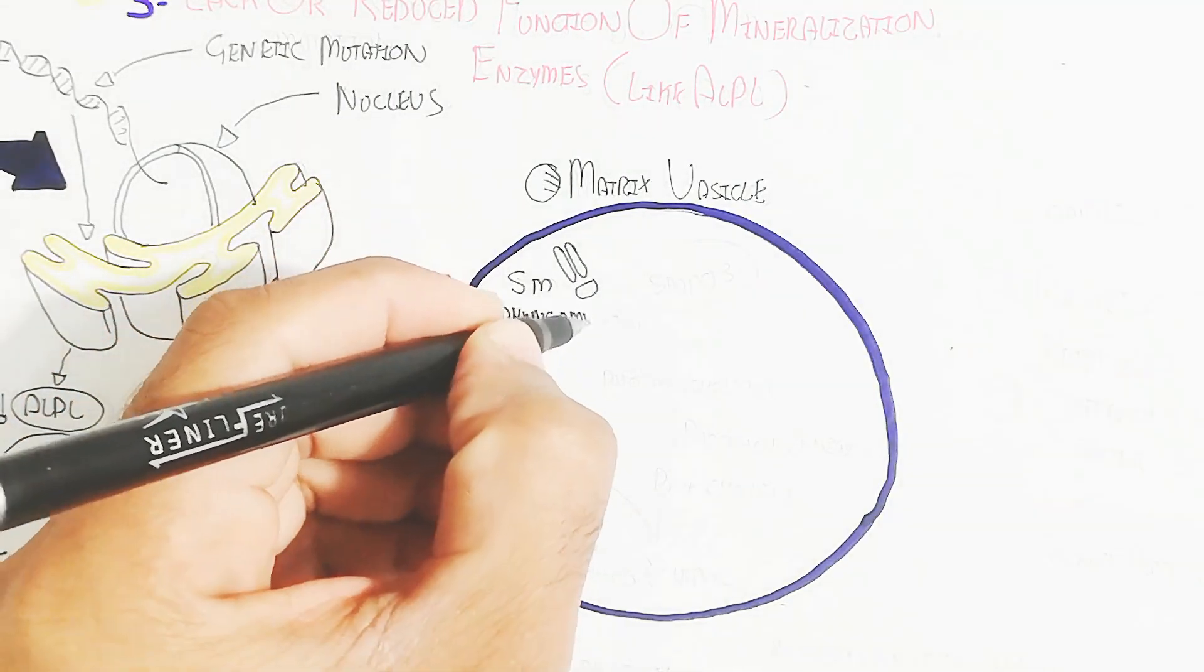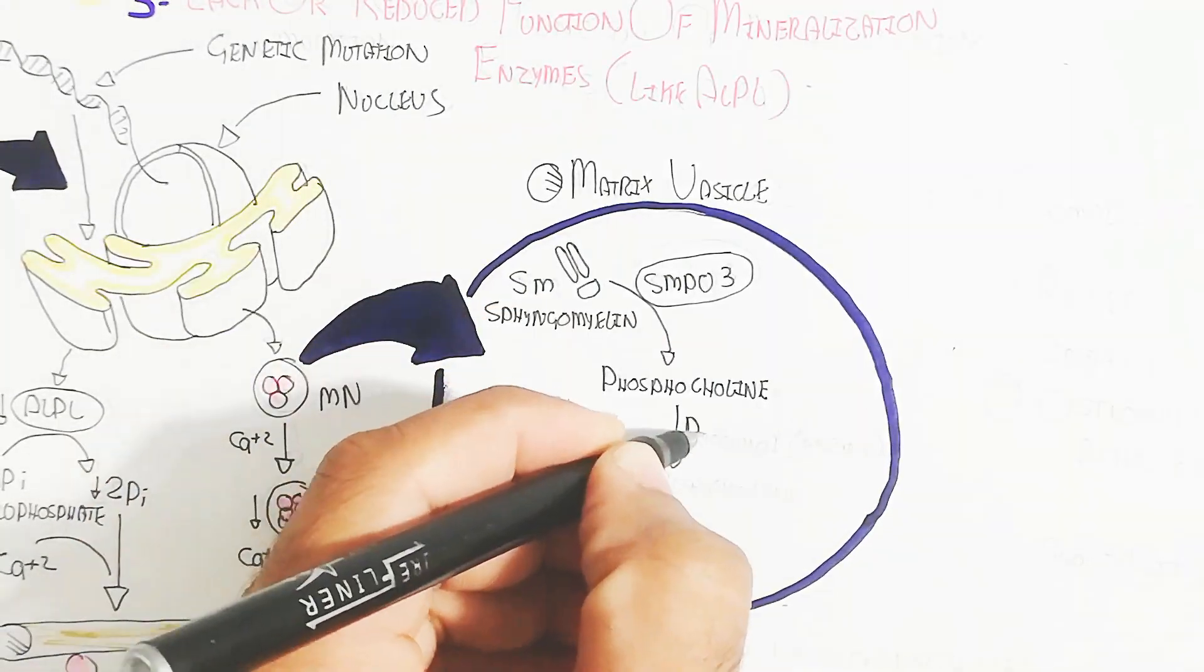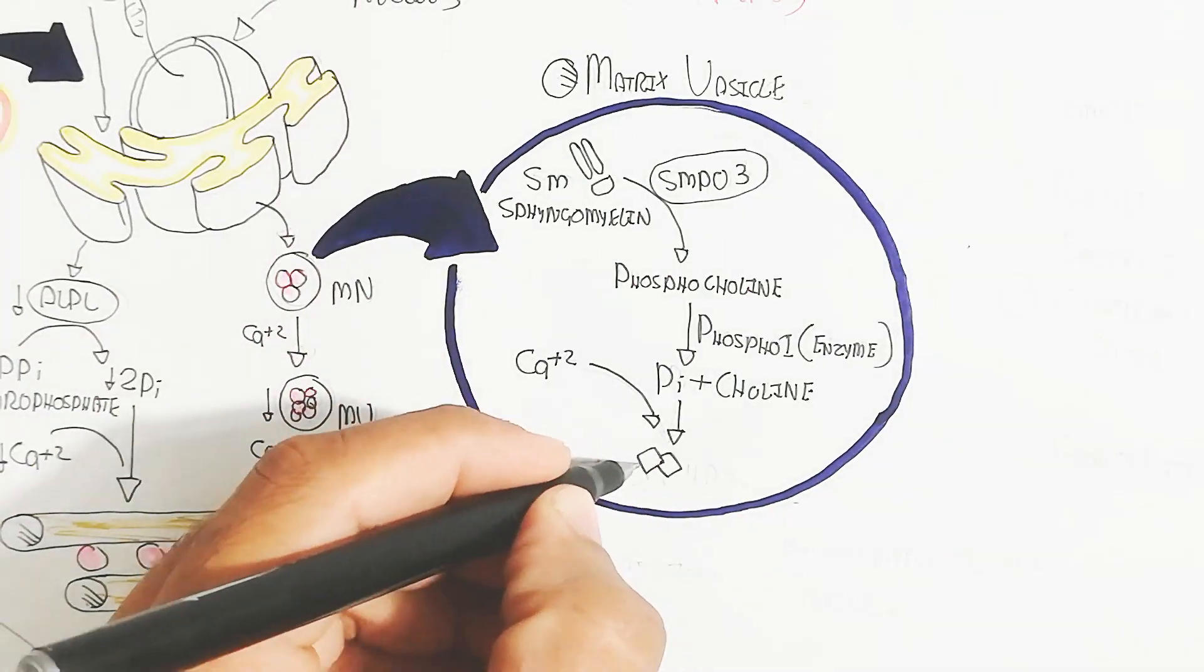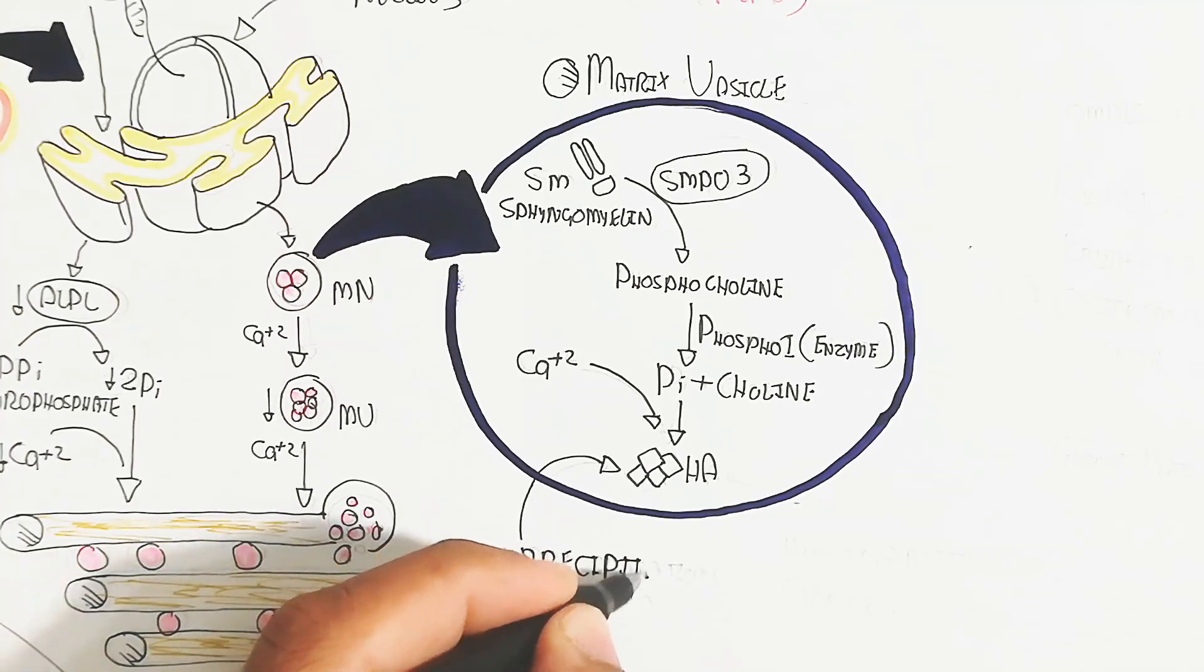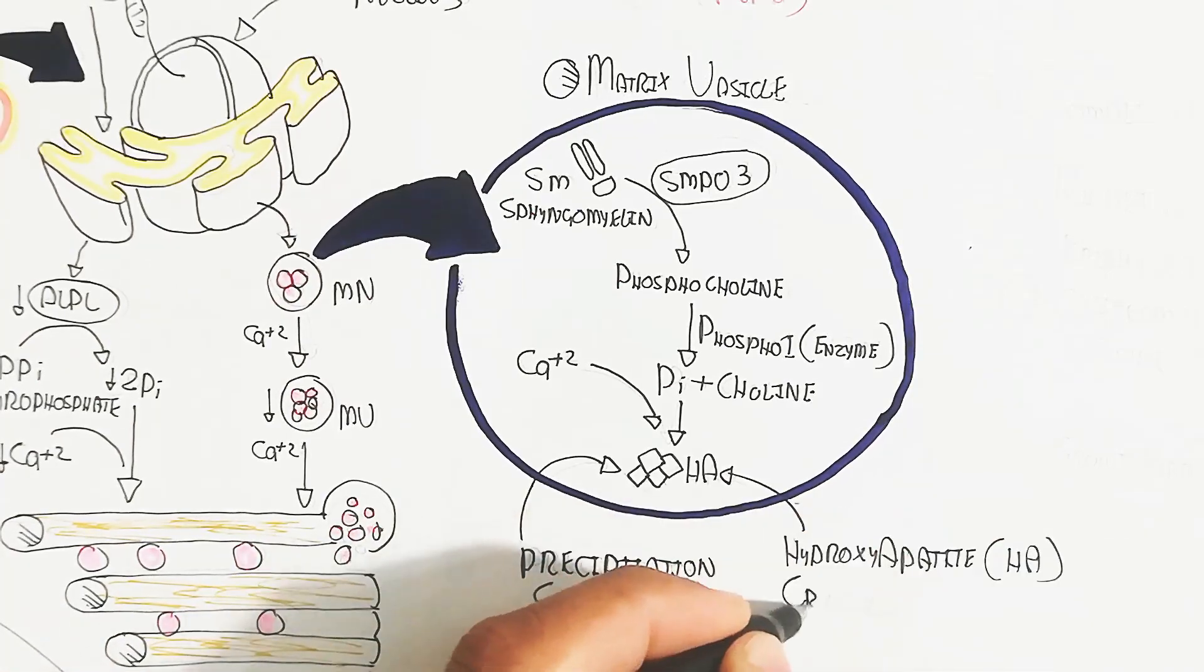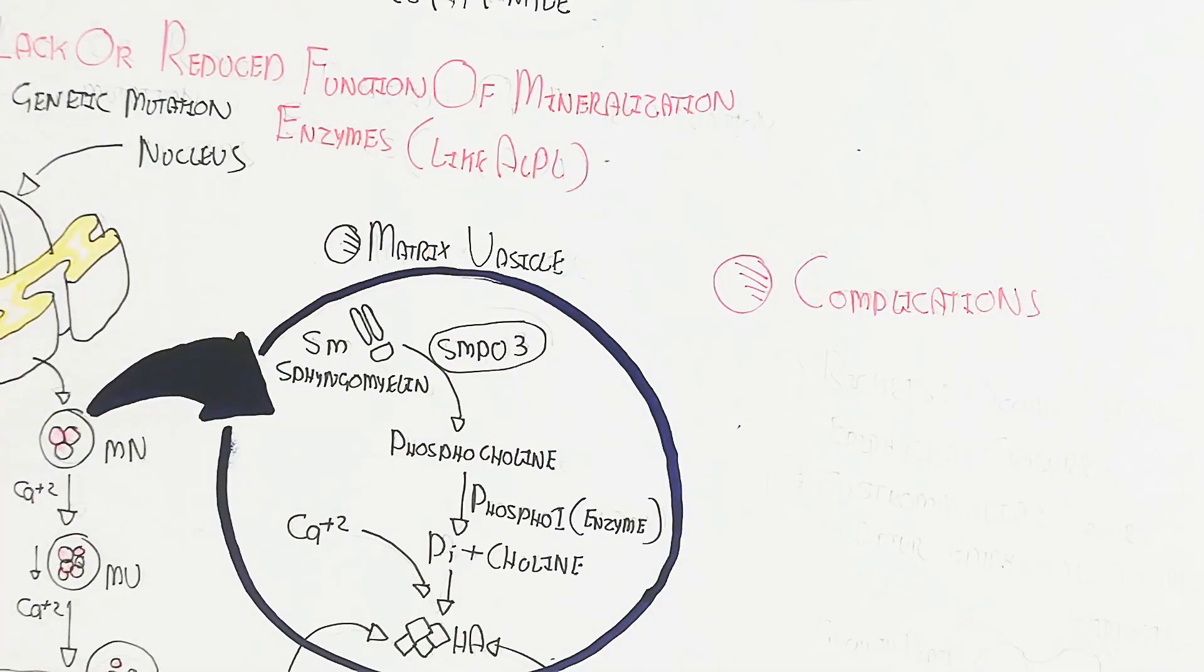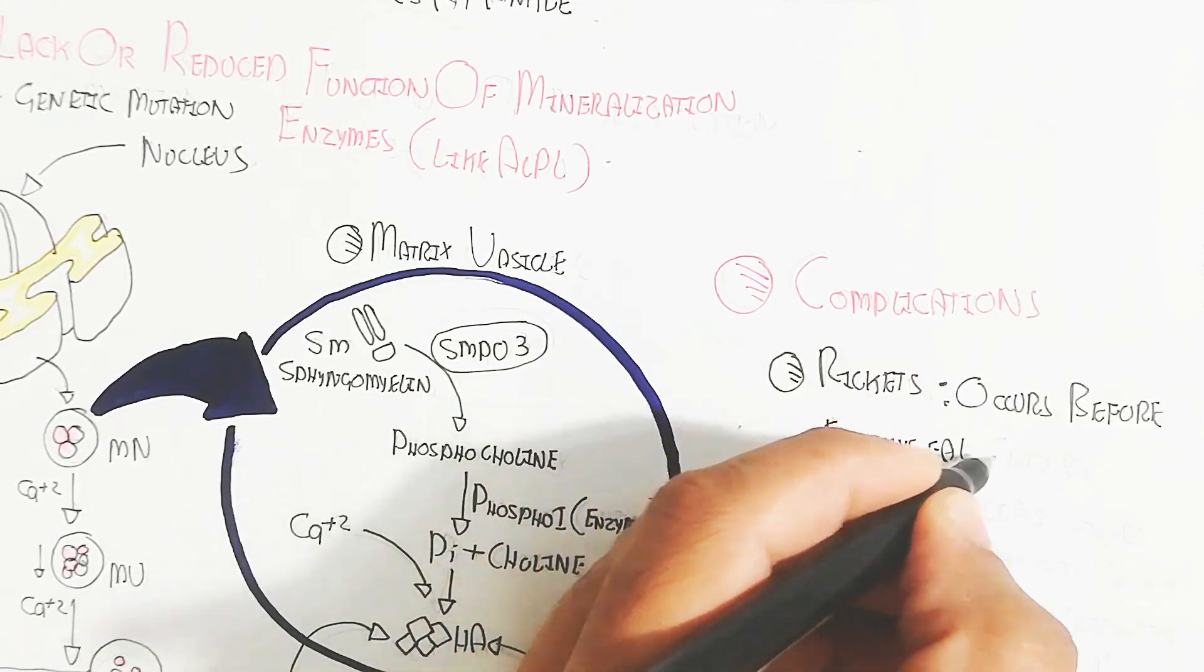On the other hand, MV the matrix vesicle will become a calcium deposition into the collagen in bone. This is the matrix vesicle which contains sphingomyelin. The sphingomyelin is attached with SMPO3 protein enzymatically leading to phosphocholine formation. The phosphocholine enzyme will lead to detachment of the phosphate group and choline, and the phosphate group and calcium will deposit in the form of hydroxyapatite crystal. This hydroxyapatite crystal is a form for the deposition of calcium and phosphate into the bone.